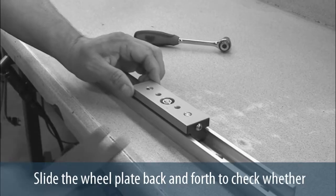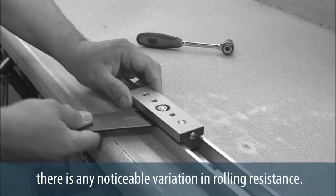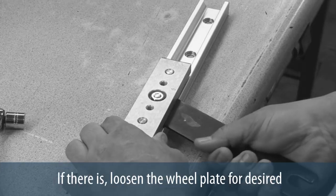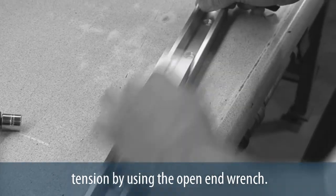Slide the wheel plate back and forth to check whether there is any noticeable variation in rolling resistance. If there is, loosen the wheel plate for desired tension by using the open end wrench.